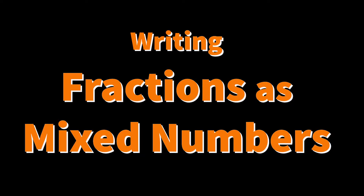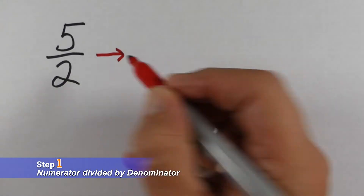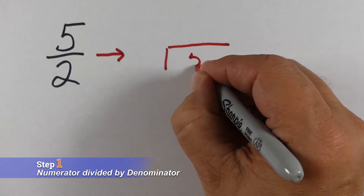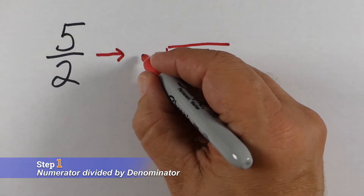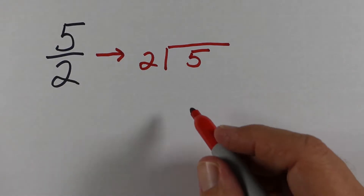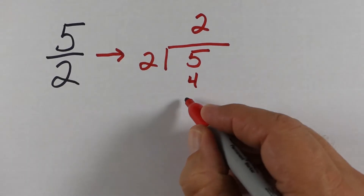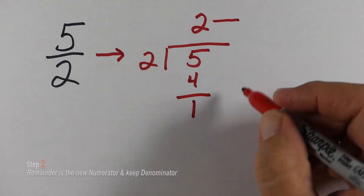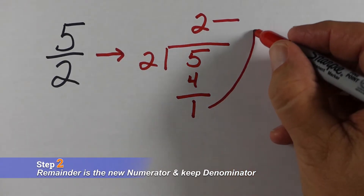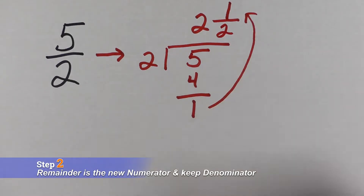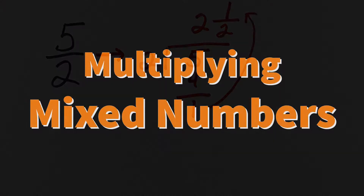Now, writing improper fractions as mixed numbers. A lot of times we have improper fractions and need to write them as mixed numbers. All fractions are division problems, so we take our numerator divided by our denominator. Two goes into five two times; we have a remainder of one, so we put it in the numerator spot and keep the two as our denominator.